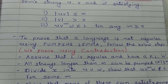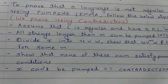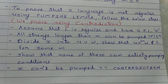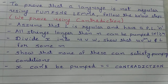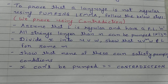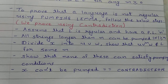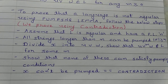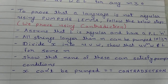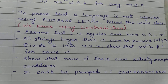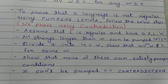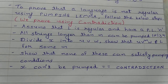To prove that a language is not regular using pumping lemma, follow the below steps. We prove it using the method of contradiction. First, assume that the given language L is regular and has a pumping length n, so all strings longer than n can be pumped. We show that x is greater than or equal to n, divide x into u, v, w, and show that for any m, u, v power m, w does not belong to L.